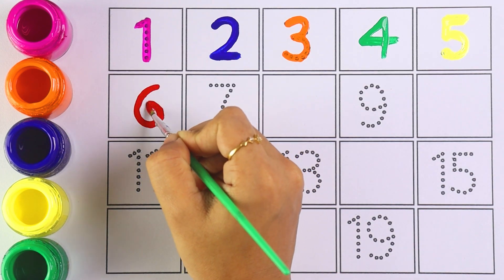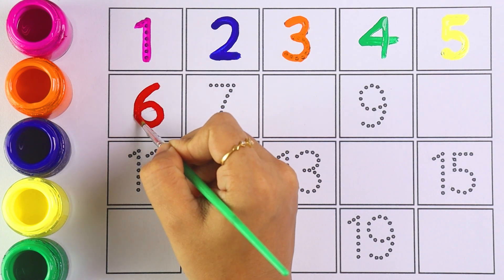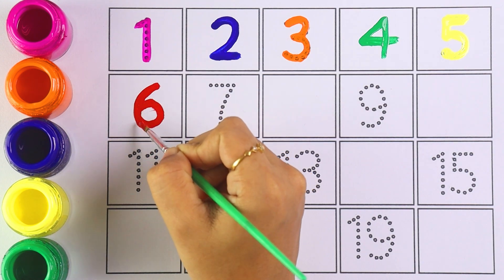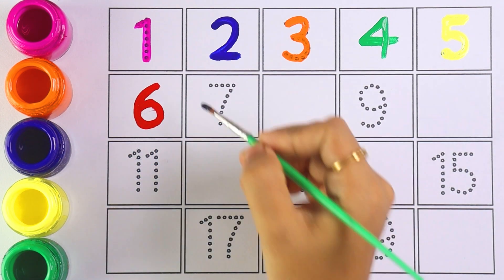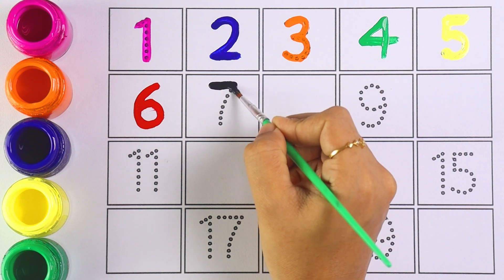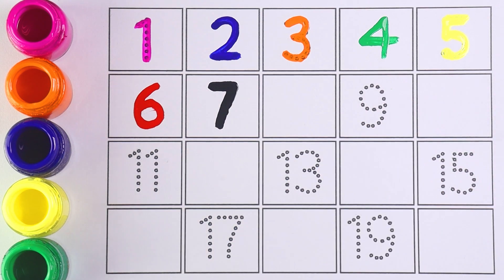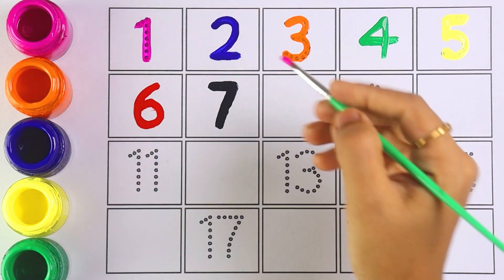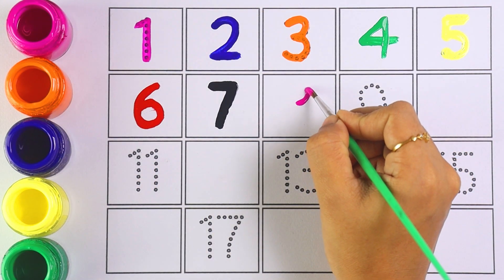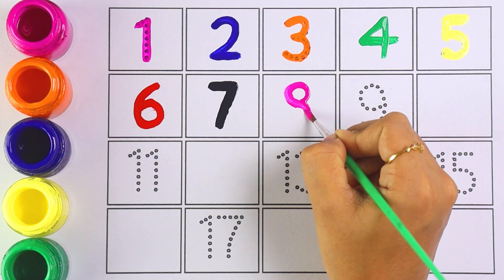Number seven. Kids, can you repeat after me? Number seven. Well done kids. Now I'm writing number eight, number eight.